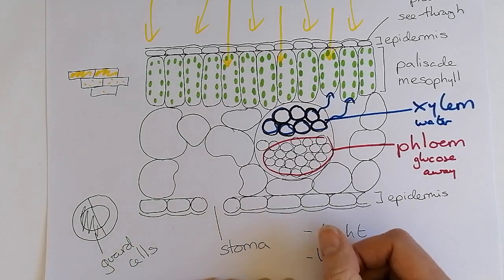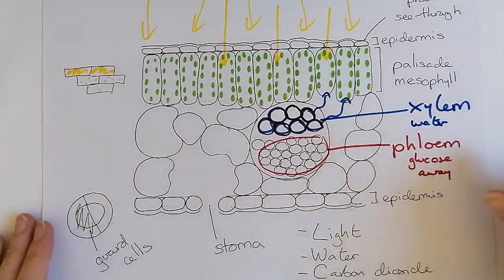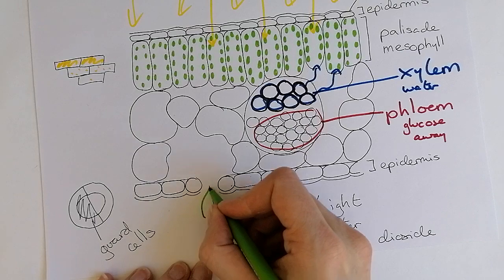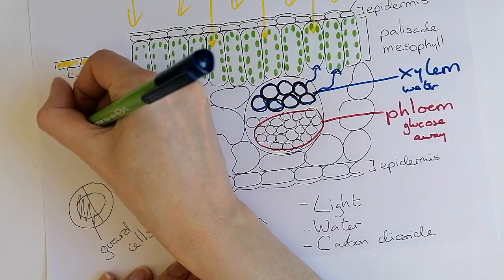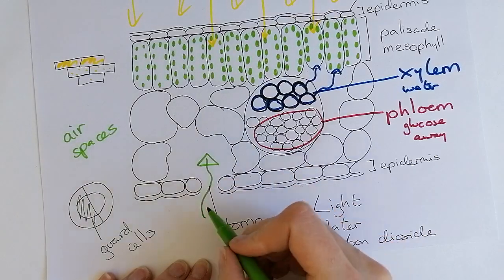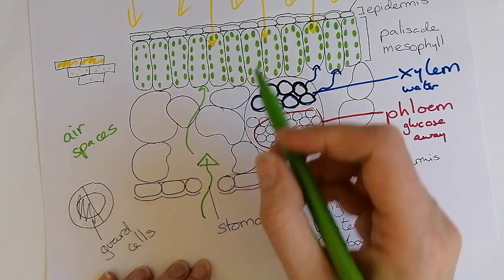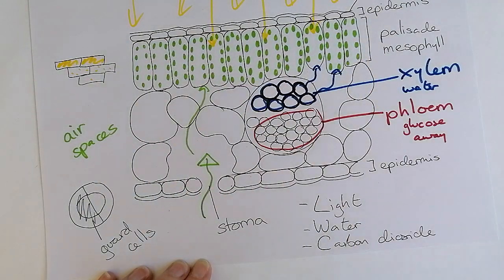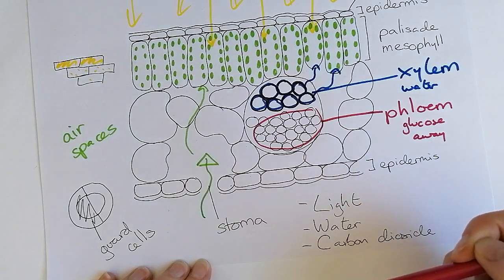The other thing that we will require for photosynthesis is carbon dioxide. Carbon dioxide gas comes through the stoma or multiple stomata. Carbon dioxide diffuses into the plant and uses these air spaces to weave its way where it needs to go, up to the cells that are photosynthesizing. When these cells release oxygen as a waste product, that oxygen goes back this way and back out again. So carbon dioxide goes into the plant and in general oxygen will leave.